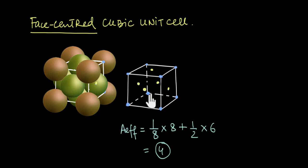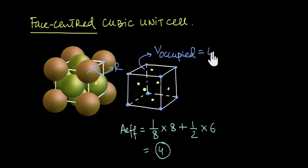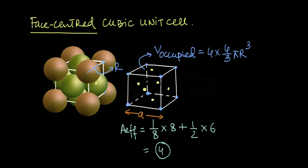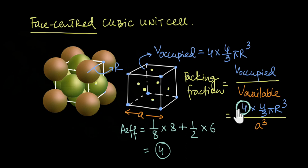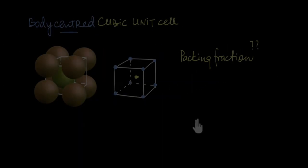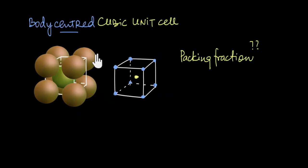We can think of the FCC unit cell as effectively containing four atoms. If each atom has radius r, the volume occupied is 4 × (4/3)πr³. With edge length a, the packing fraction for FCC equals 4 × (4/3)πr³ / a³.